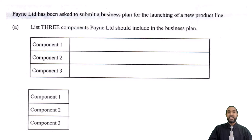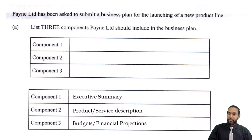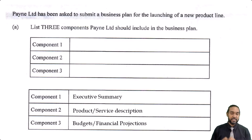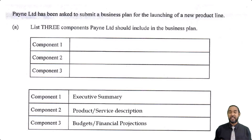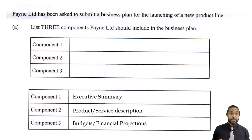Normally I give you guys more than they ask for, but I'm just giving you the bare three this time: executive summary, product or service description, and budgets or financial projections. Now, according to what textbook you refer to or what website you find when you Google, you will have many different components to a business plan. What they have on a CSEC POA syllabus is not gospel — they are just that author's interpretation. There are other versions of business plans which I encourage you to explore.